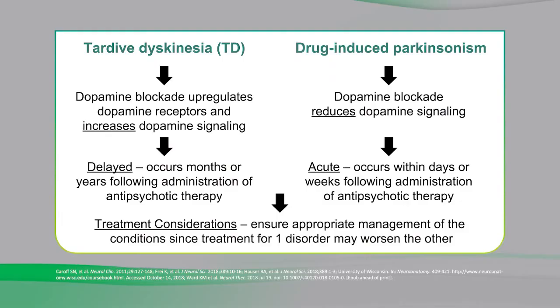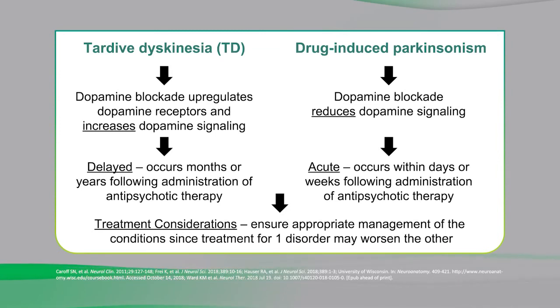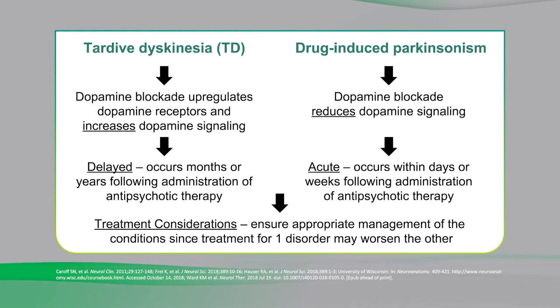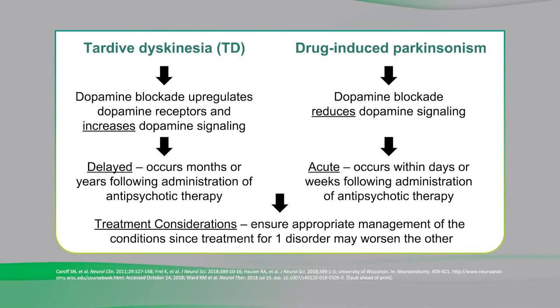Based on the fact that the underlying mechanisms of TD and drug-induced Parkinsonism are so different, it becomes clear why it is necessary to properly diagnose and appropriately treat these conditions. It's important to differentiate between TD and drug-induced Parkinsonism to ensure appropriate management, since treatment for one disorder may worsen the other. For example, VMAT2 inhibitors approved for TD treatment should not be used to treat drug-induced Parkinsonism. Additionally, in some cases, the use of anticholinergics approved for the treatment of drug-induced Parkinsonism in individuals with TD can actually worsen their TD symptoms.